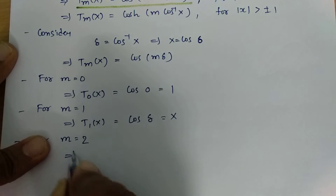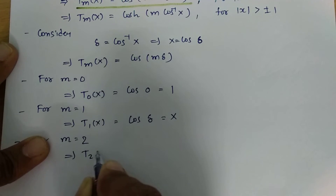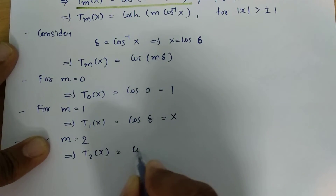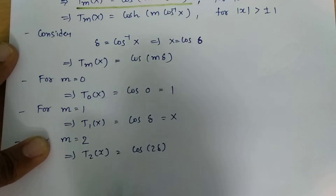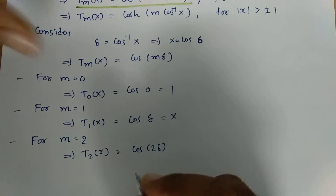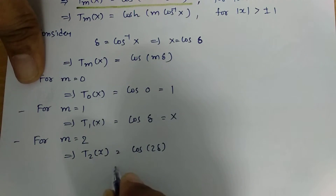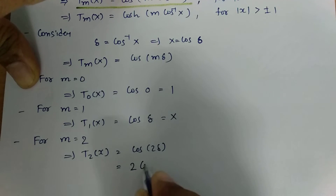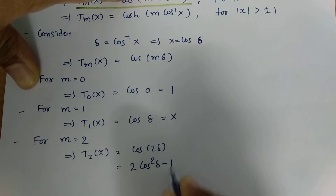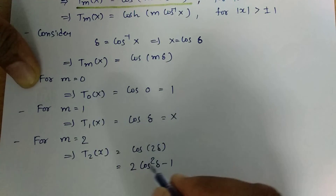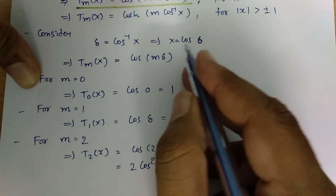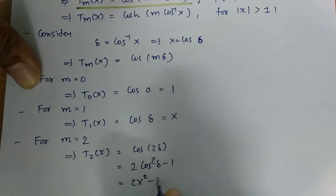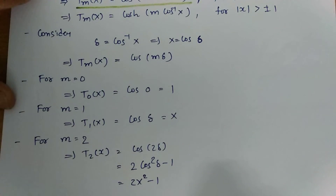For m equals 2, T2 of x equals cos of 2 delta. Now cos of 2 delta equals 2 cos squared delta minus 1. Since cos delta equals x, we can say T2 of x equals 2x squared minus 1.